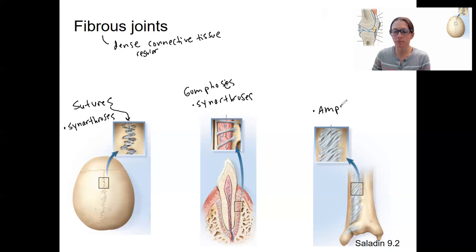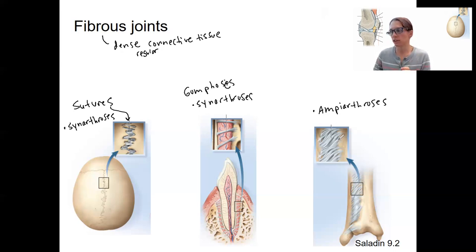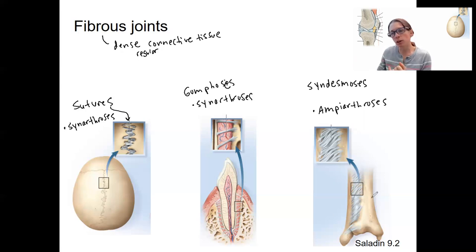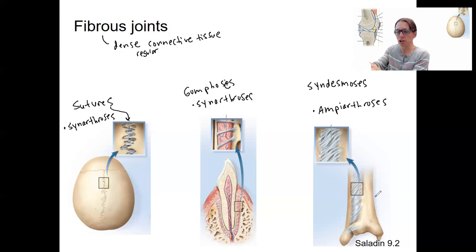The third type are syndesmoses, and they are amphiarthroses — slightly mobile. These are membranes that connect two parallel long bones together, such as the radius and ulna of the lower arm or the tibia and fibula of the lower leg. You want those bones to stay together as you move, but you also need some flexibility. They allow for some movement, especially the radius and ulna, because rotation requires a little bit of movement.